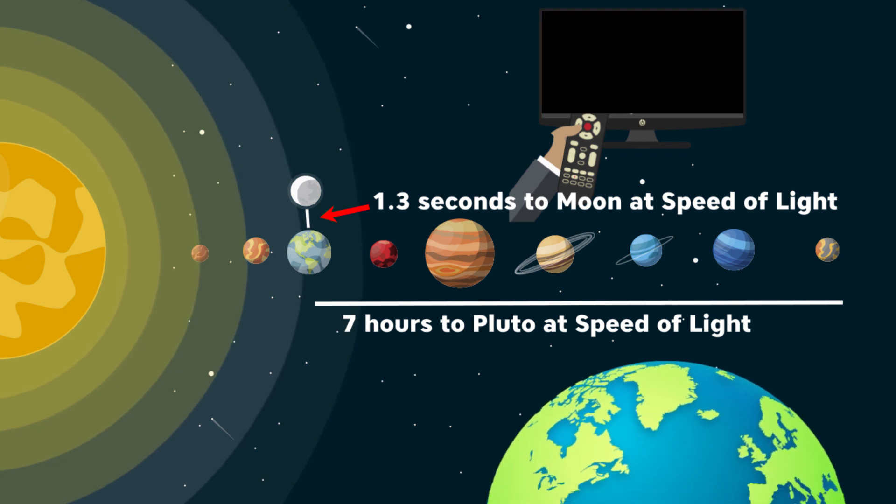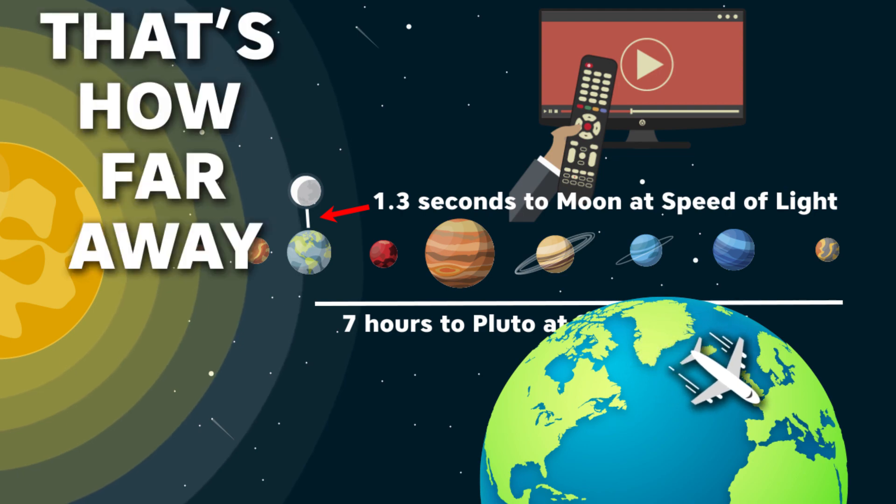In comparison, the distance from the Earth to Pluto is around the time when you fly from London to New York, about 7 hours. That's how far away Pluto is.